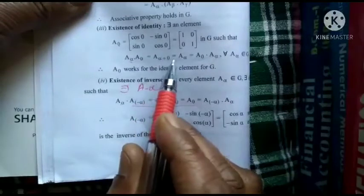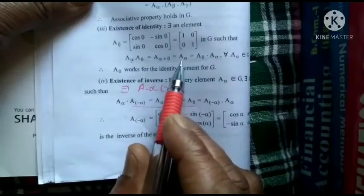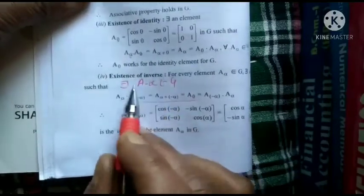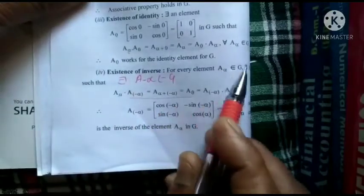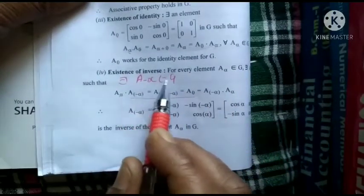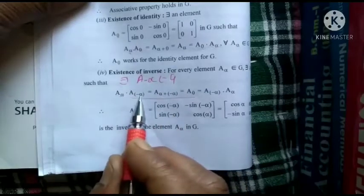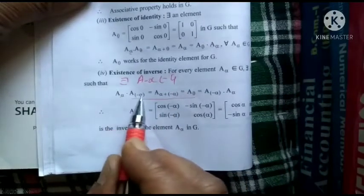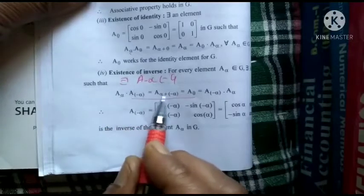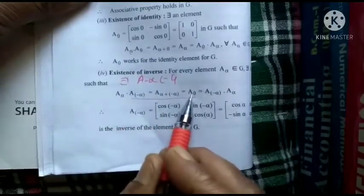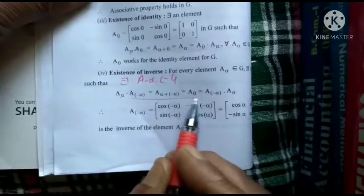A(α)·A(β) = A(α+β). Setting β = 0 gives A(α)·A(0) = A(α), confirming A(0) is the identity element. For the existence of inverse: for any A(α) ∈ G, A(−α) also belongs to G, and A(α)·A(−α) = A(α + (−α)) = A(0), which is the identity element.